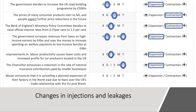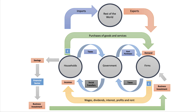Last one: Nissan announces it's cancelling a planned expansion of their factory in the northeast due to fears over the UK's trade relationship with the EU post-Brexit. The likely injection or leakage affected is investment and exports. Investment first — they're clearly cancelling planned investment, so investment goes down. Most of the output of Nissan cars from the UK is actually exported to the European Union, so you can make a case for investment with a knock-on effect on exports. Either way, other things being the same, it's going to cause a contraction in GDP.